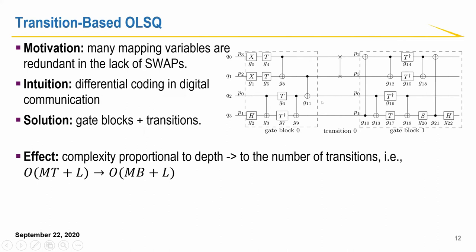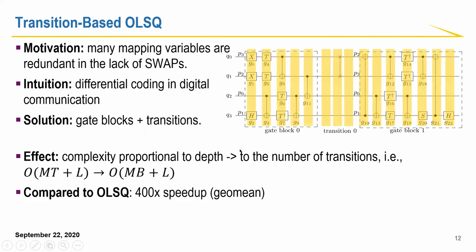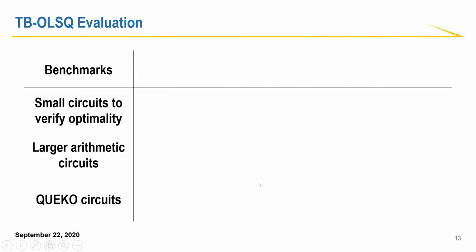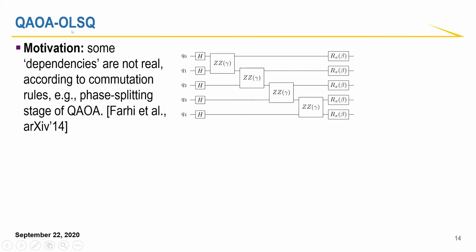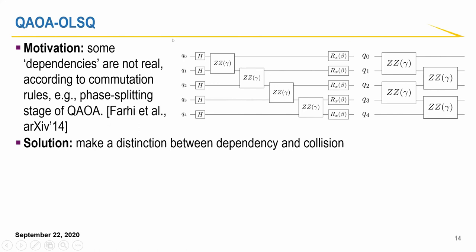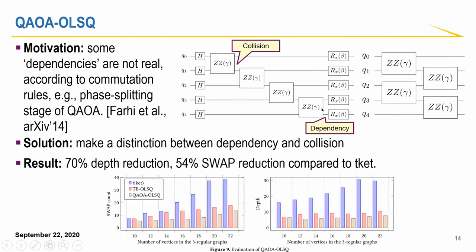We relax this OLSQ formalization because we notice that only when the mapping changes, the mapping variables are changed. So we relax from the number of total time steps to the number of gate blocks or between transitions and achieve 400x speedup. Here are some results compared to leading heuristic approaches like TCAT. We reduce the additional swap gates a lot and we can also optimize fidelity compared to this leading accuracy work. And finally, we have some customized compilation for the QAOA circuits because some of those dependencies are not necessary. So we remove some of the dependencies and then we achieve even further reduction in swap count and depth.